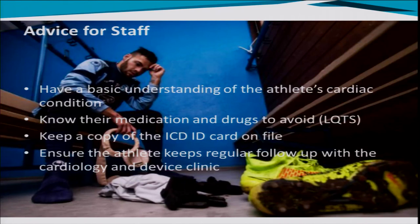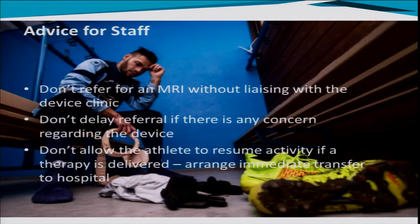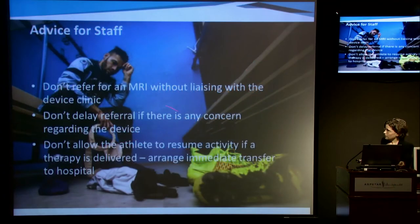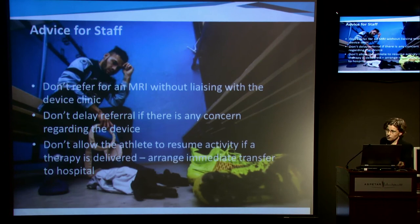You need to know about any medication they're taking — especially if they've got long QT syndrome, so that you know about drugs to avoid. It's good practice to keep a copy of their ICD identification card on file and have the contact details of their local cardiologist or device clinic. Make sure the athlete keeps regular follow-up. Don't refer the athlete for an MRI without liaising with the device clinic — MRIs are possible with an ICD in situ, but it depends very much on the type of ICD and lead. If you're worried about the device — direct trauma, swelling, or early signs of infection — don't delay; refer immediately, don't do anything to the pocket, don't stick a needle in it, don't give them antibiotics, just send them straight to the device clinic.